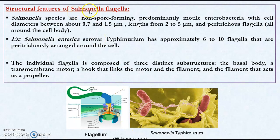Coming to the structural features of the Salmonella flagella — all Salmonella species are non-spore forming, predominantly motile enterobacteria with cell diameters ranging from 0.7 to 1.5 micrometres and lengths from 2 to 5 micrometres. They all have peritrichous flagella, meaning the entire cell body is surrounded by flagella. For example, Salmonella enterica serovar Typhimurium has approximately 6 to 10 flagella arranged around the cell peritrichously.